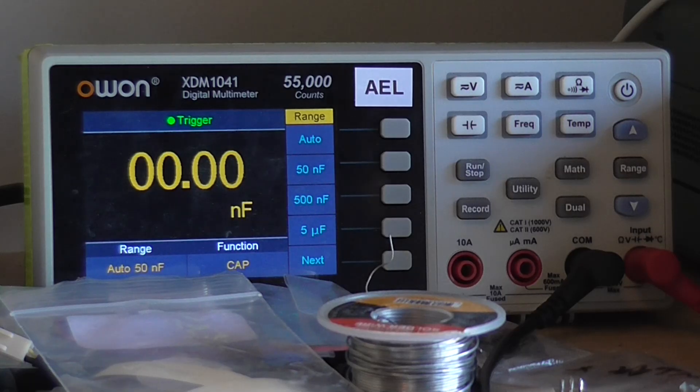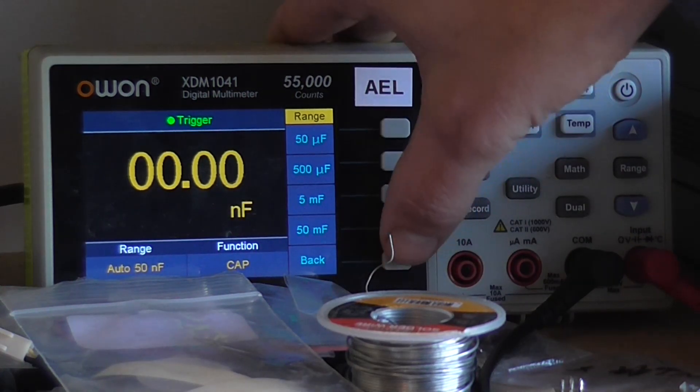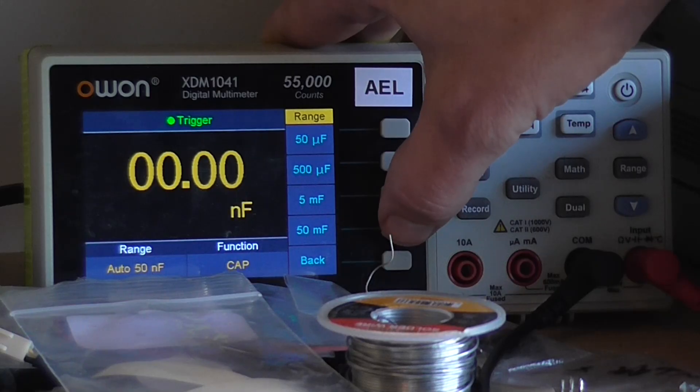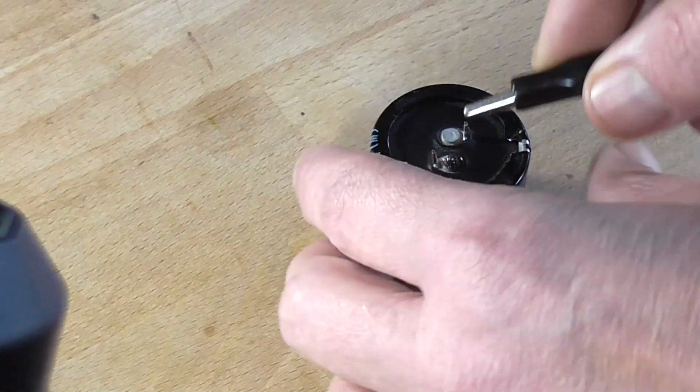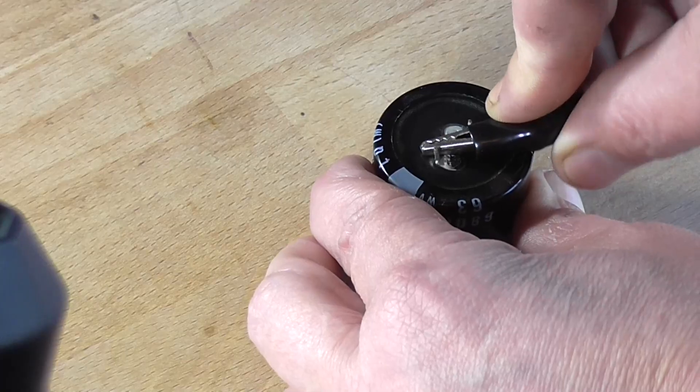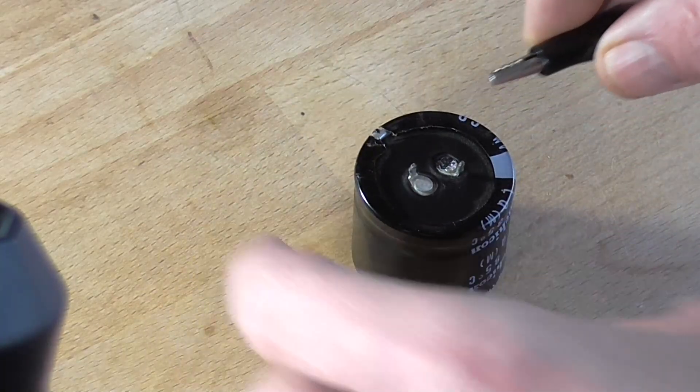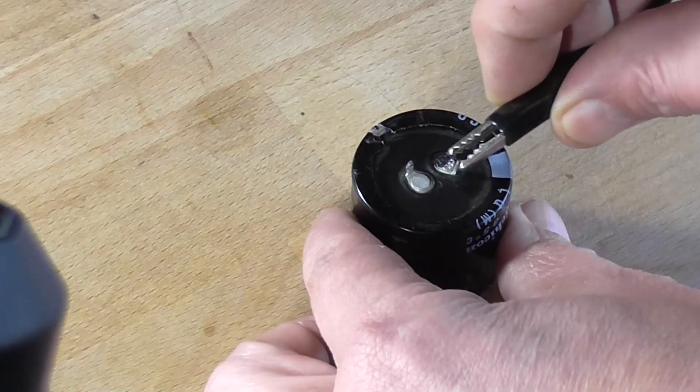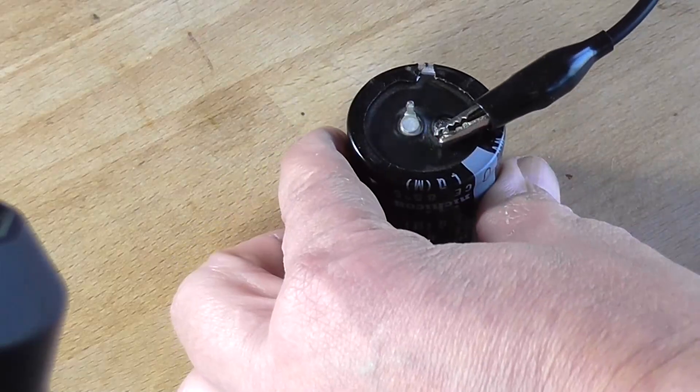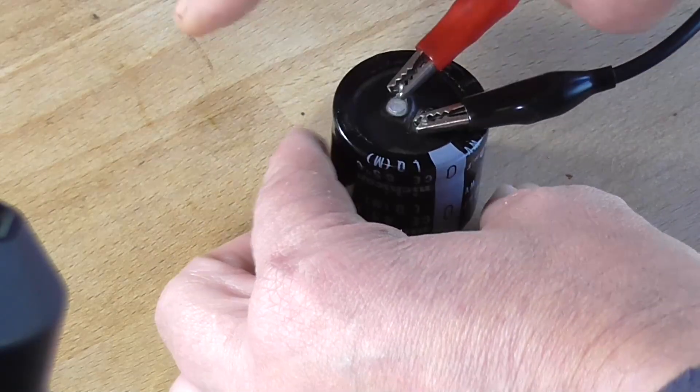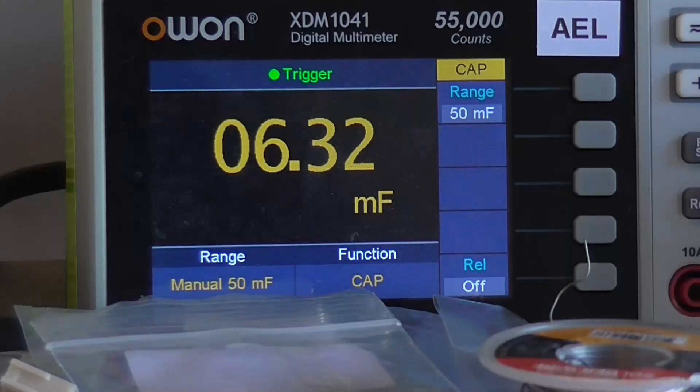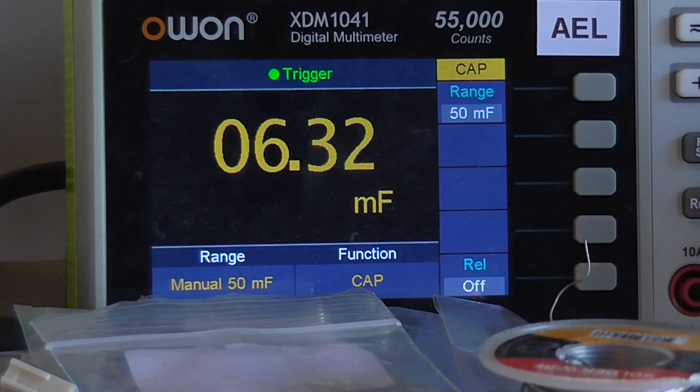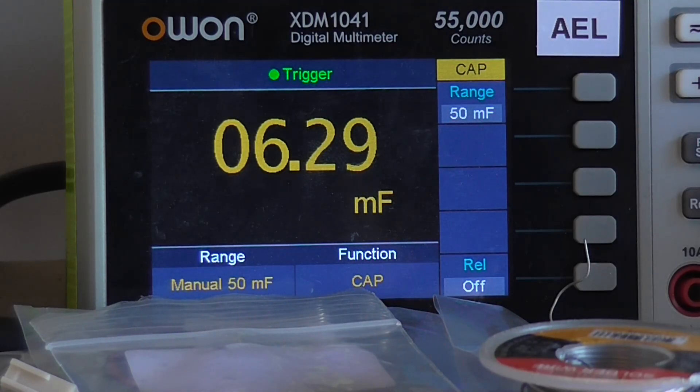So I'm going to set this multimeter's capacitance function to the highest setting, which is 50,000 microfarad. And just to make sure, I'm going to short the capacitor out, make sure there's no charge on it. But remember, capacitors can start to build up a charge by themselves because of the chemical reactions inside of the capacitor over time. So connect the meter across the terminals and we let the meter catch up.